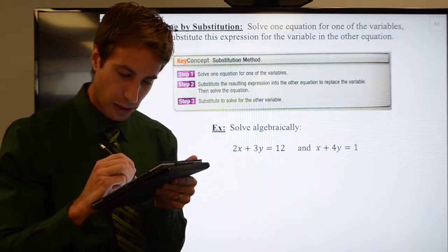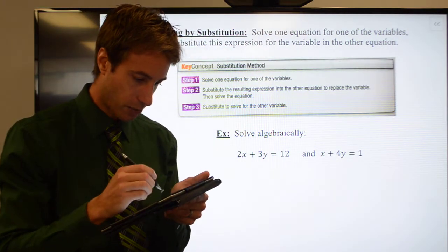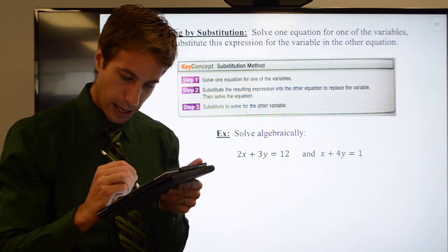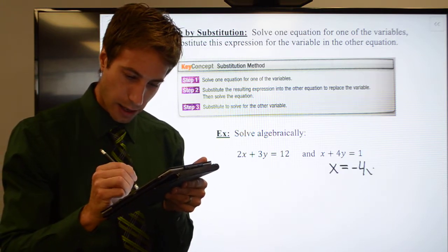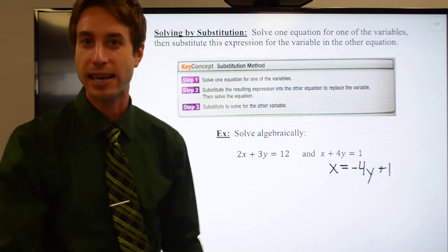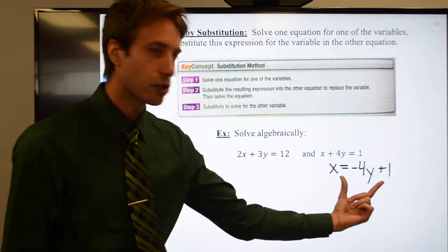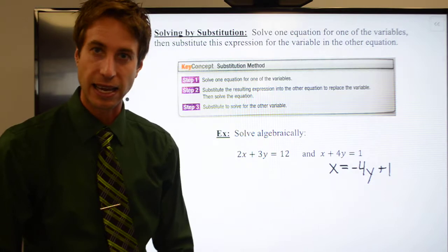I can solve for x. Oh sorry, switch markers. There it is. x is equal to negative 4y plus 1, right? See how easy that is? Really easy to just go ahead and isolate a variable.